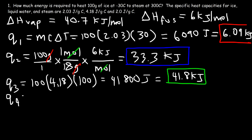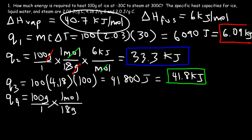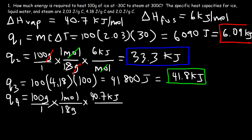For Q4, we use the same conversion process: start with 100 grams of water, divide by 18 to get moles, then multiply by the enthalpy of vaporization of 40.7 kilojoules per mole. So 100 times 40.7 divided by 18 equals 226.1 kilojoules of energy.